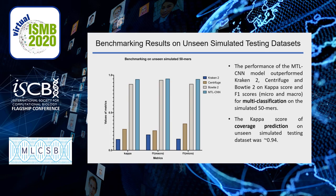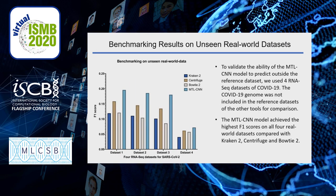We did benchmarking work on an unseen simulated testing dataset, generating 1 million unseen simulated 50-mers. From the results, we can see that the Kappa score and F1 scores of MTL-CNN outperformed Kraken-2, Centrifuge, and Bowtie2. Besides, the Kappa score of coverage prediction on the unseen simulated testing dataset was very high, close to 0.94.